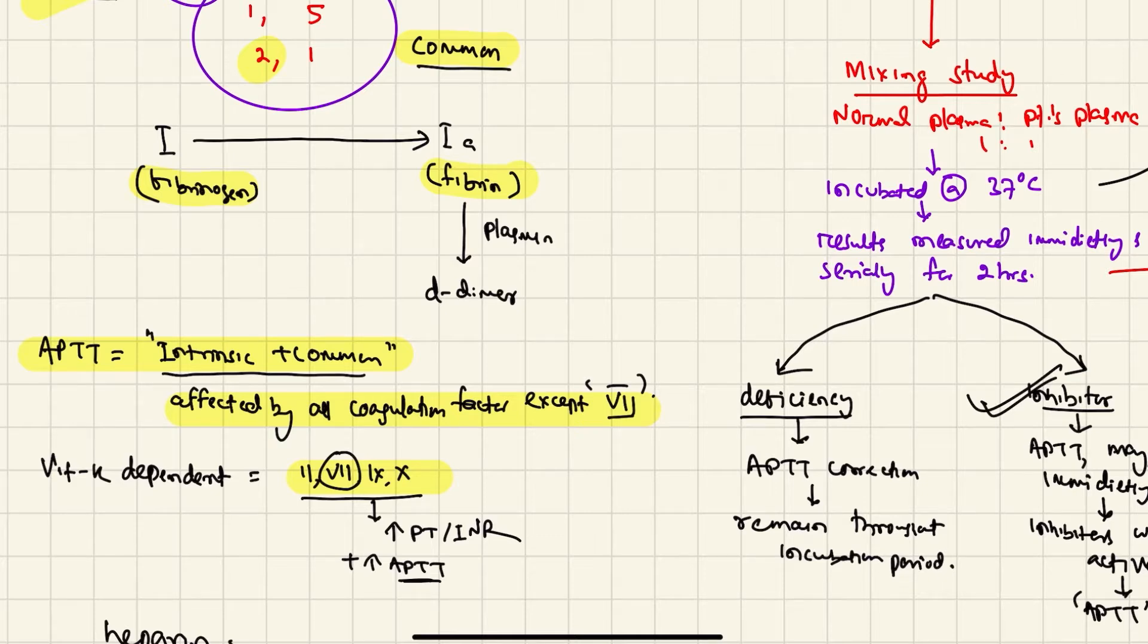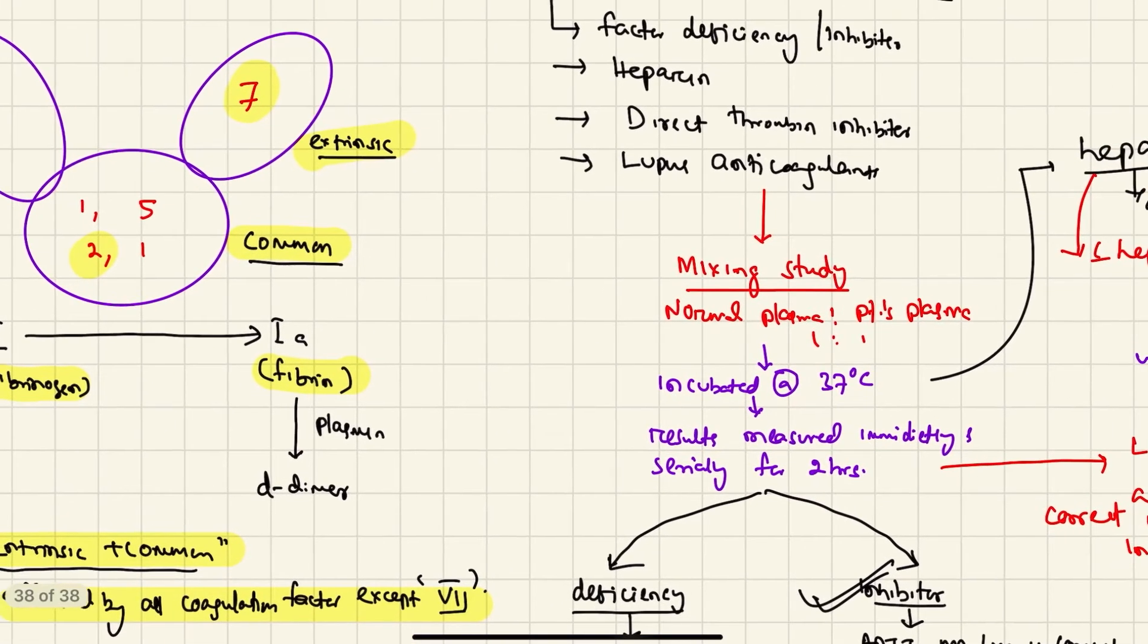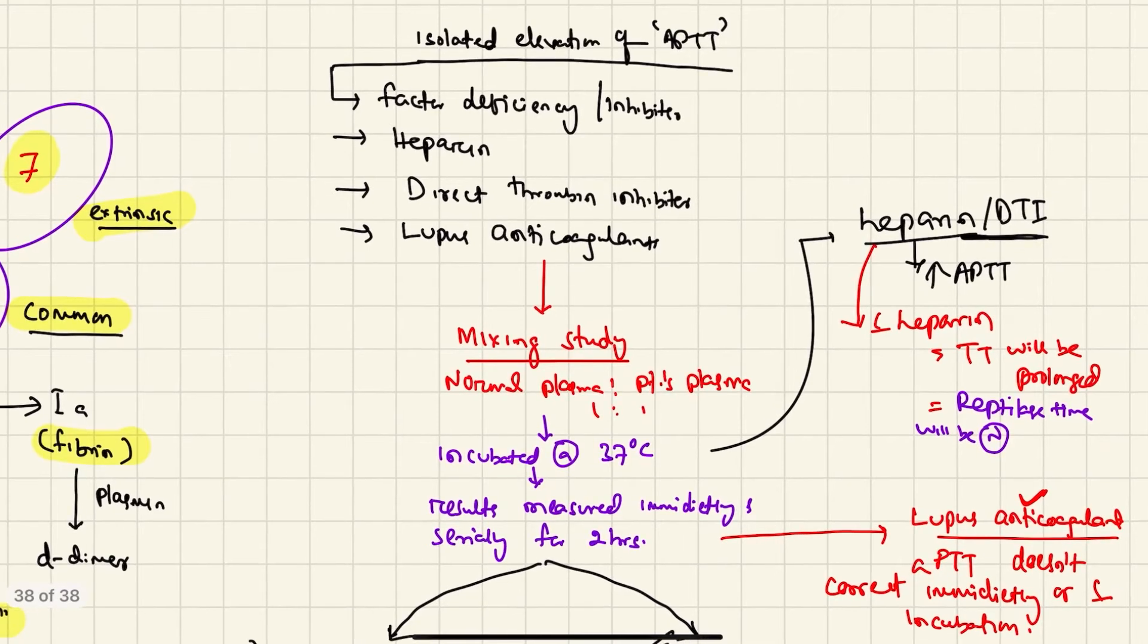We also have vitamin K-dependent factors: factor 2, 7, 9, and 10. When they are affected, at least with factor 7, the PT/INR will increase. Also the aPTT will increase. Now coming to our case, we had an elevation of aPTT.